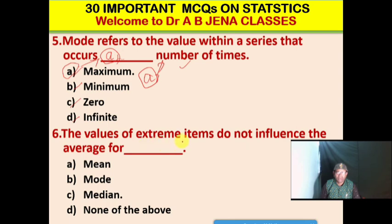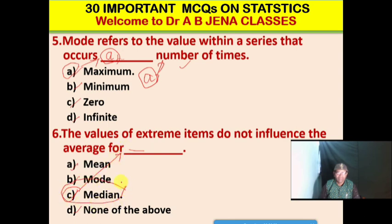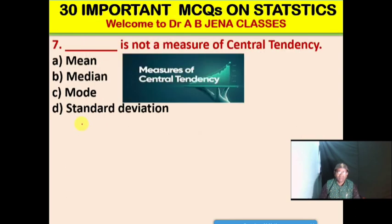Next MCQ: The values of extreme items do not influence the average for dash. A. Mean. B. Mode. C. Median. D. None of the above. C is the right option. The values of extreme items do not influence the average for median.